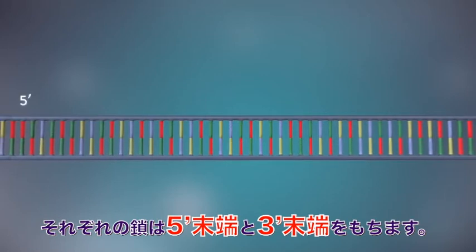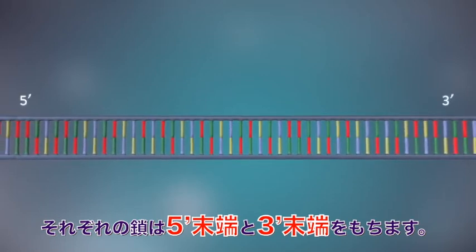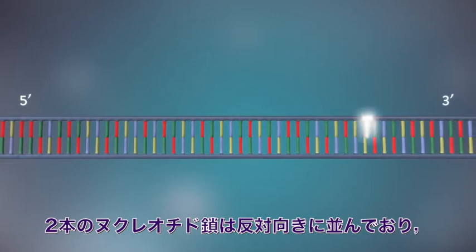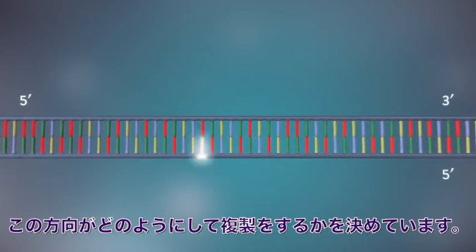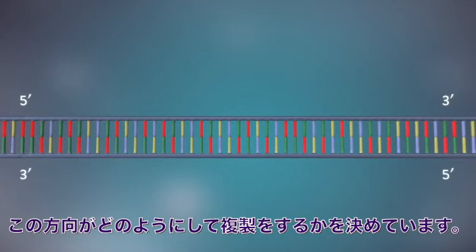Each strand has a five prime end and a three prime end. The two strands run in opposite directions. This determines how each strand of DNA is replicated.